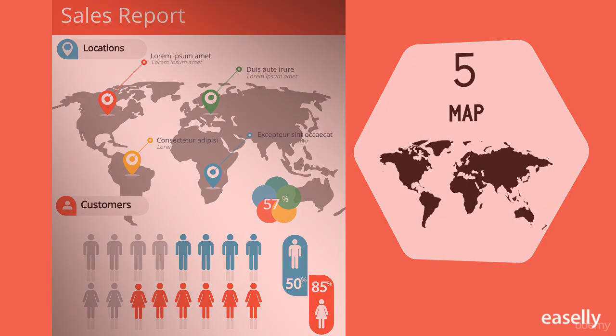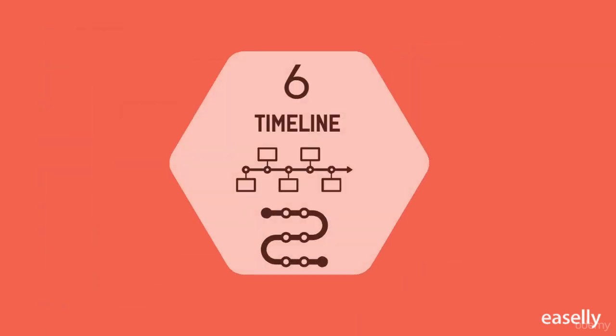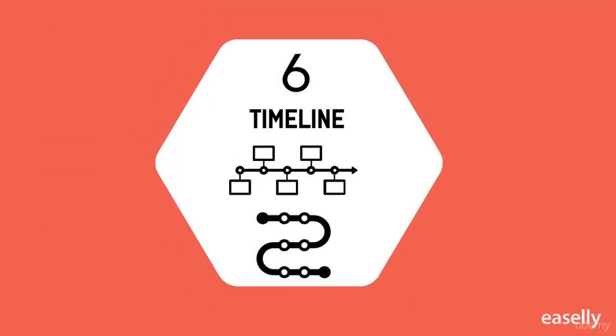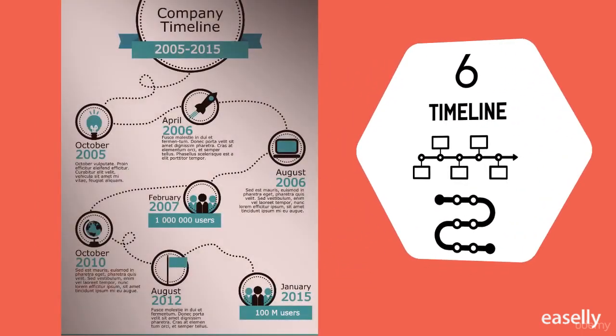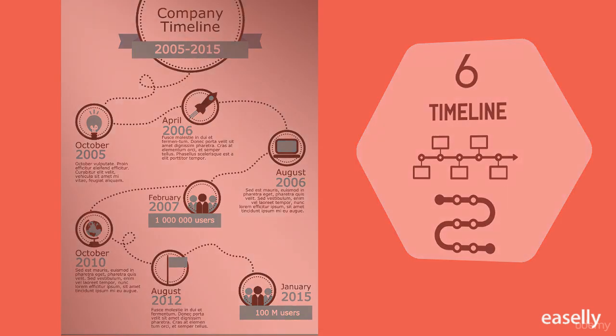Number six: the timeline infographic tells a story through chronological flow. It is best used to show how something has changed over time, or make a long, complicated story easier to understand. It can also show how one thing leads to another.